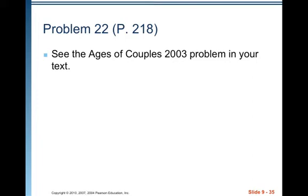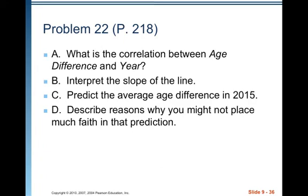Let's look at problem number 22 on page 218. Go ahead and pause the video for a second and look at the example. They've got a nice couple of graphs there and they go into explaining it really well. So go ahead, pause the video. I'll be here when you come back. Okay. So we're going to answer four questions. What is the correlation between age difference in year? And then we're going to interpret the slope of the line. Then we're going to predict the average age difference in 2015 and describe reasons why you might not place much faith in that prediction.